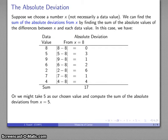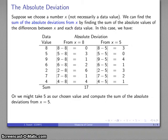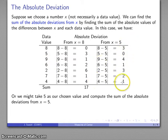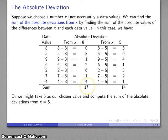Can I do better? Suppose I take 5 as my center. I find the absolute value of the difference between each data value and 5: absolute value of 8 minus 5, 5 minus 5, 9 minus 5, 6 minus 5, and so on. I sum those absolute deviations and find that the sum from 5 is less than the sum from 8. So in some sense, 5 is closer to these data values than 8 is, and 5 would seem to be a better representative.